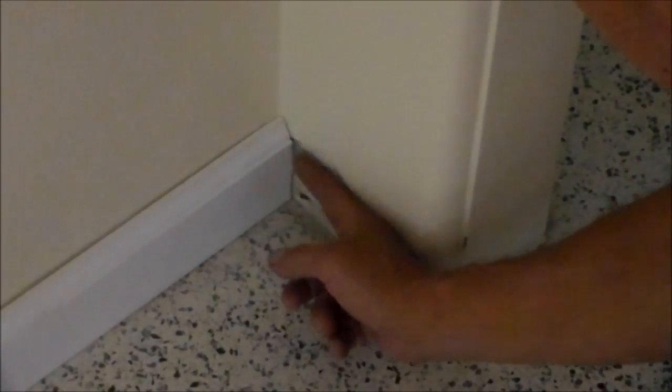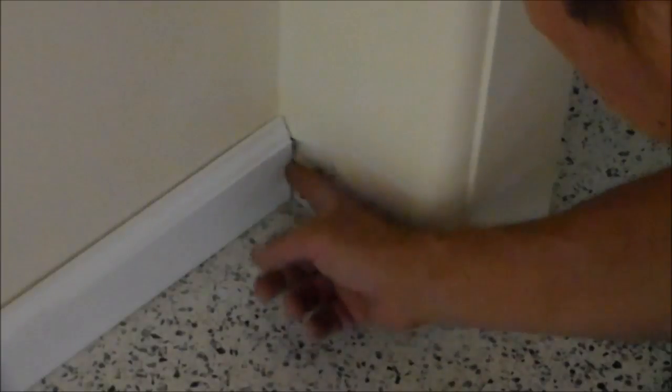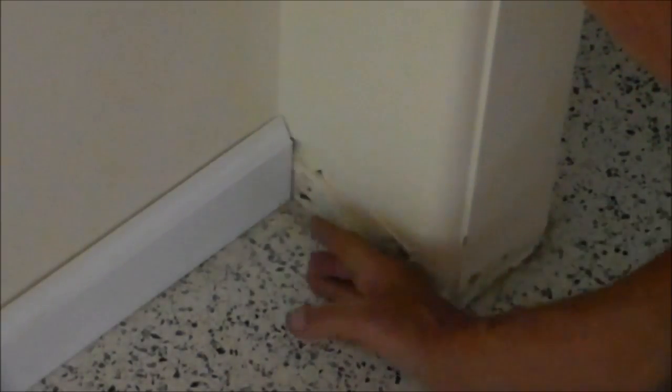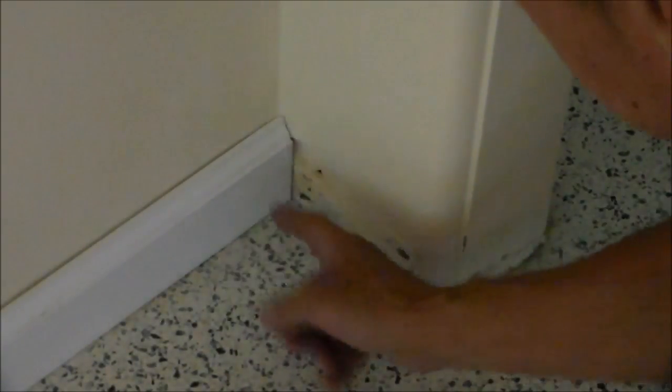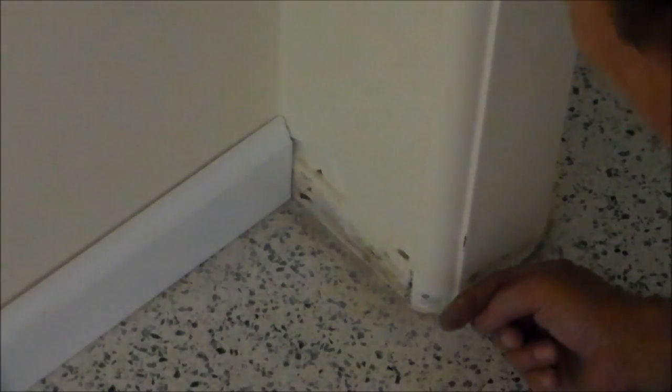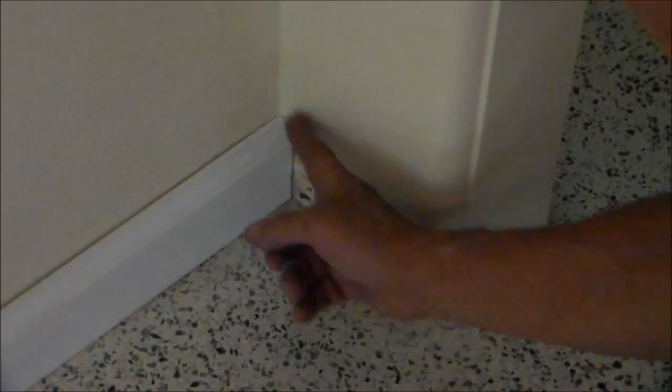First thing you want to do when you're going to do the miter is put this first piece all the way up tight against the wall. It's cut square. The miter piece then, I'm going to take a piece that's oversized and then I'm going to cut on this piece a 45 degree angle.